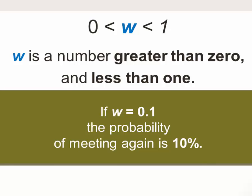So, as W gets closer to 0, the likelihood of meeting again gets closer to 0. And as W gets closer to 1, the likelihood of meeting again gets very high.